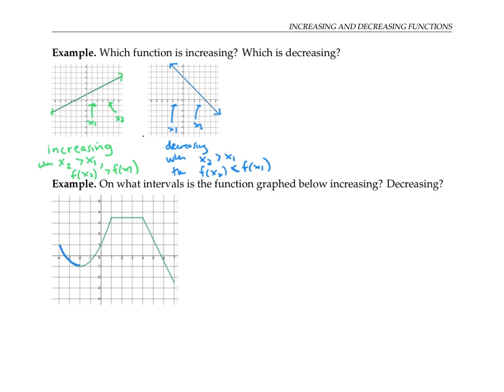Over here, we also have a part of the graph where the function is decreasing. Now, this part of the graph, the function is increasing, because as x goes from left to right, the y values are going up. I'll mark that one in green for increasing.